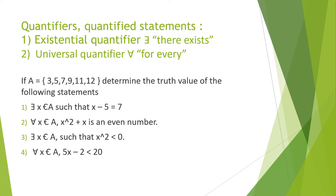Let's consider this example. Set A contains the elements 3, 5, 7, 9, 11, and 12. Determine the truth value of the following statements. First: there exists x belonging to A such that x minus 5 equals 7. The quantifier is 'there exists,' so the statement is true if it holds for at least one member. Since 12 is an element of A and 12 minus 5 equals 7, the statement is true. Therefore the truth value is T.